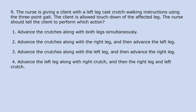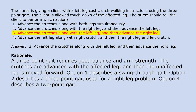The nurse is giving a client with a left leg cast crutch walking instructions using the 3-point gait. The client is allowed touchdown of the affected leg. Which action should the nurse instruct? 1. Advance the crutches along with both legs simultaneously. 2. Advance the crutches along with the right leg and then advance the left leg. 3. Advance the crutches along with the left leg and then advance the right leg. 4. Advance the left leg along with right crutch and then the right leg and left crutch. Answer 3. A 3-point gait requires good balance and arm strength. The crutches are advanced with the affected leg, then the unaffected leg is moved forward. Option 1 describes a swing-through gait. Option 2 describes a 3-point gait for a right leg problem. Option 4 describes a 2-point gait.